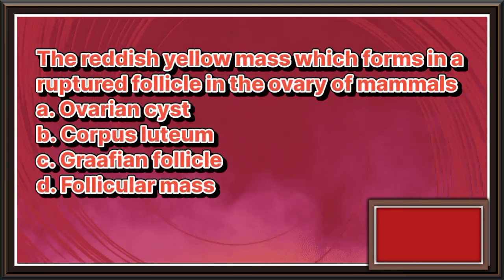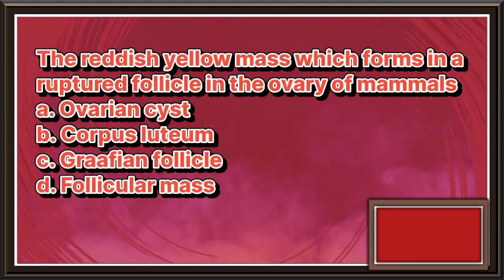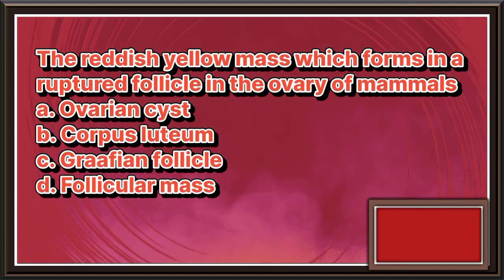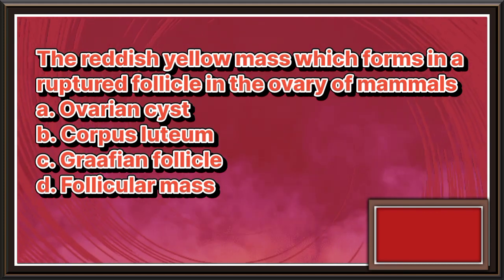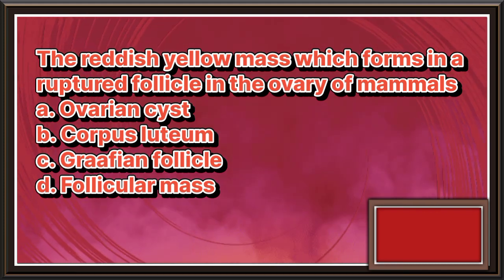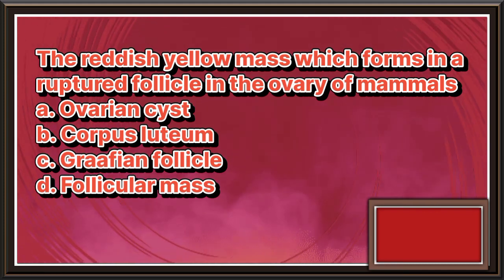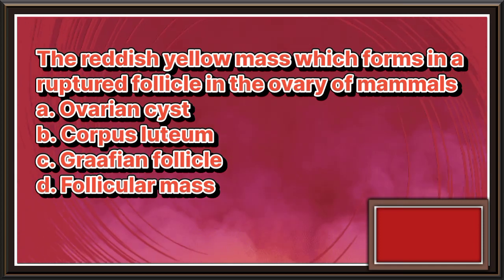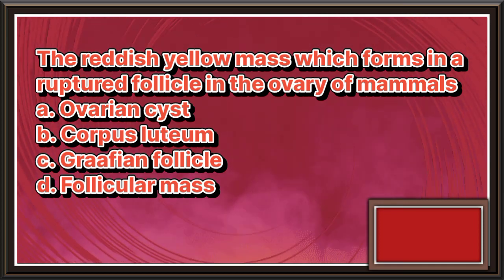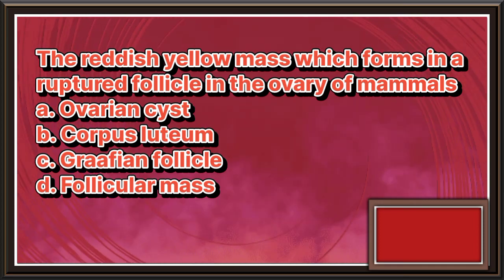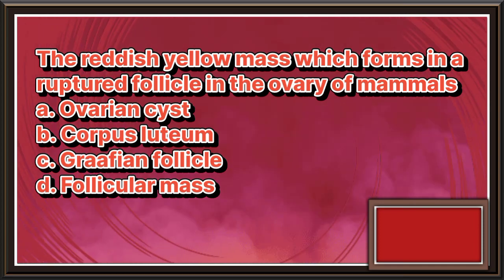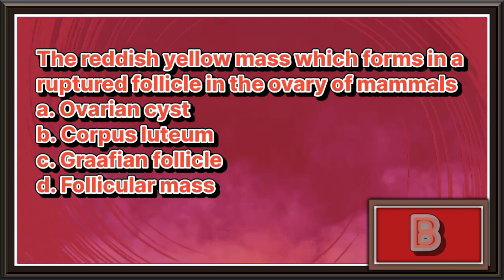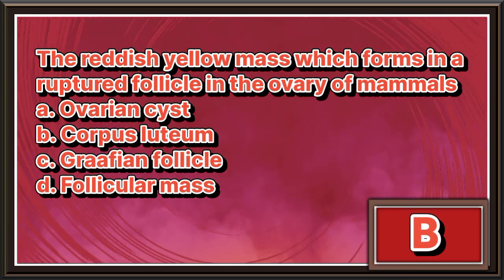The reddish-yellow mass which forms in a ruptured follicle in the ovary of mammals. A. Ovarian cyst. B. Corpus luteum. C. Graafian follicle. D. Follicular mass. The answer is letter B.